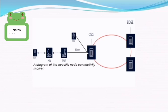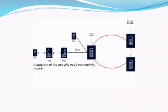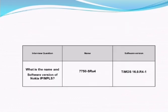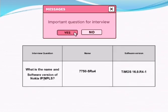Sites are connected from microwave to microwave, and that fiber goes into the CSG Nokia router. From the CSG Nokia router, it goes into the edge router at a separate fiber optic network site. Nokia IPMPLS has the version TMOS R16 R1-1, for interview purposes.